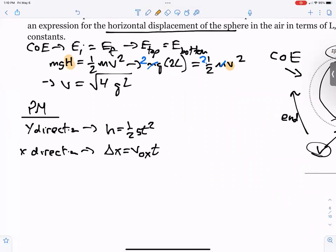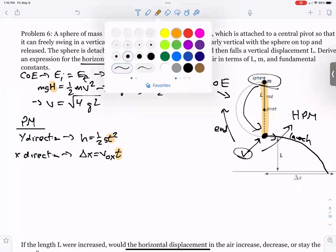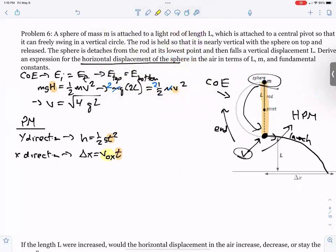Now, you have to solve the first equation for time and plug it in there. Your velocity at the bottom of the swing, however, V not X, that's going to be the same as the square root of 4GL. So we do have a few things to substitute. Let's go ahead and get to it.